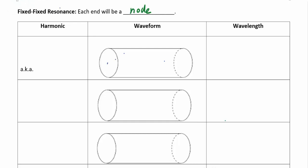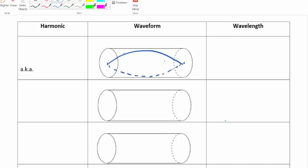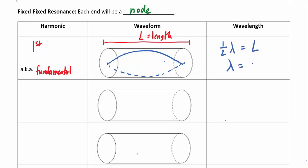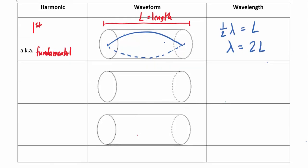For the fixed-fixed tube, the first harmonic has a node at each end, and the waveform fits exactly half a wavelength into the tube length L. This is called the fundamental frequency — the lowest possible frequency that still creates a standing wave. So the wavelength equals two times L: λ = 2L.